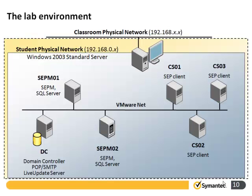This is the lab environment. We can see that we have six VM guest systems. We have a domain controller, which must be started at all times and must be the first system to be started. Then we have a SEPM01, the main system we will be working on for installing and configuring our environment. We have three clients — CS01, CS02, and CS03. The SEPM02 will be used at later labs but is not required for all of them. A point of note when working with VMware: it is very resource hungry, and if your lab environment is performing slowly, it's well worth suspending any guest systems you don't need running for that particular lab.